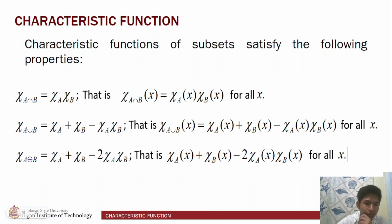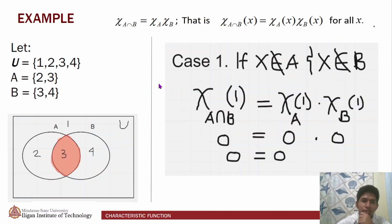For the third property, the characteristic function of the symmetric difference of A and B is equal to the sum of the characteristic function of A and B minus 2 times the product of the characteristic function of A and the characteristic function of B. So, to prove this, let's use an example for case number 1, for property 1.